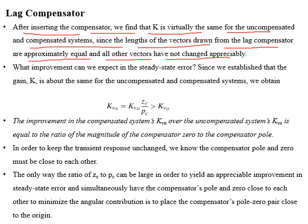Now we will study improvements in steady-state error. Since we have established that gain K is the same for both compensated and uncompensated networks, if we relate the static error constant of both networks, we find that the static error constant of the compensated network is equal to the static error constant of the uncompensated network multiplied by the ratio of the magnitude of the compensator zero to the compensator pole.